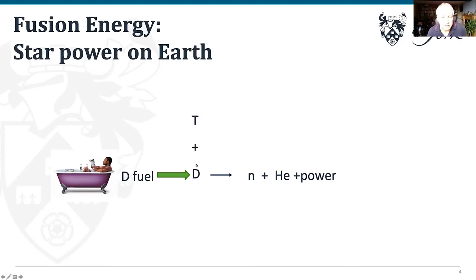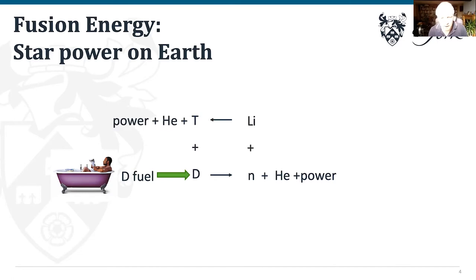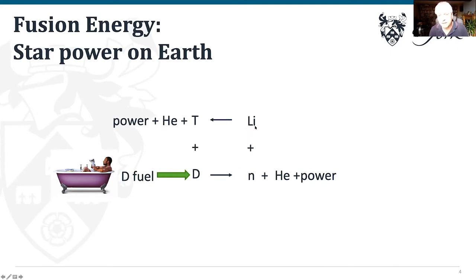Deuterium and tritium sound exotic but deuterium is plentiful — one in every 6,000 hydrogens is actually deuterium, so it's abundant in seawater. Tritium, however, is very rare and must be manufactured on site by reacting the fusion neutron with lithium. This produces tritium, which reacts with deuterium, also yielding a bit more helium and more power — a cyclic reaction constantly replenishing fuel by introducing lithium into the system.